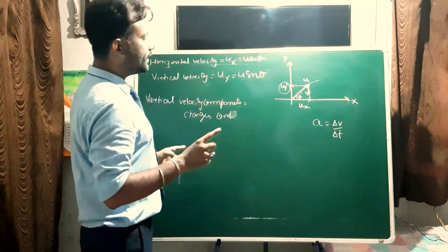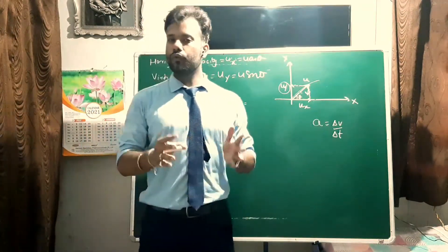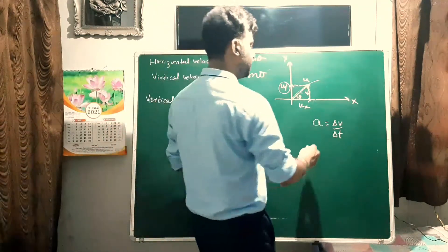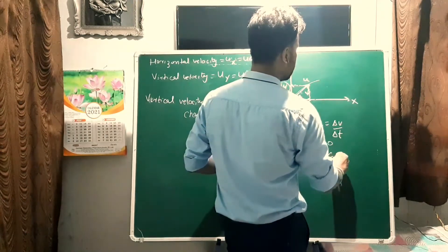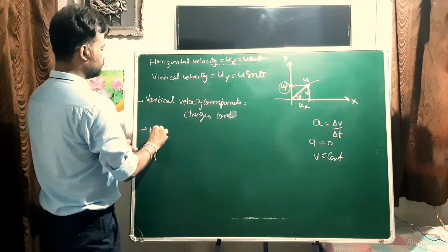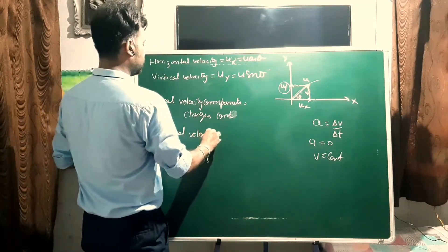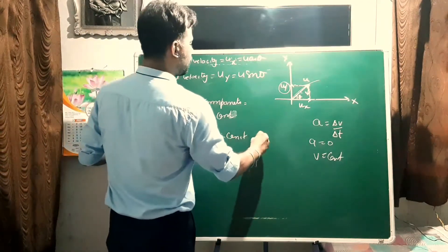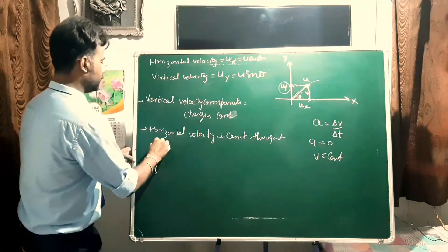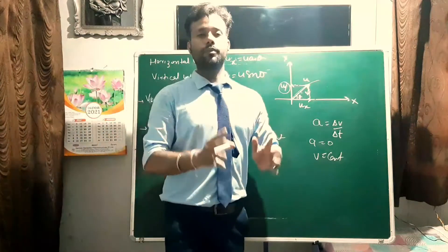On the other hand, if you consider the horizontal velocity ux, there is no force acting in the horizontal direction and hence no horizontal acceleration. Since a = 0 horizontally, the horizontal velocity remains constant throughout the entire motion. It is a uniform component of velocity.